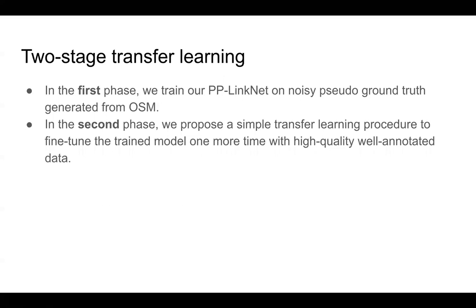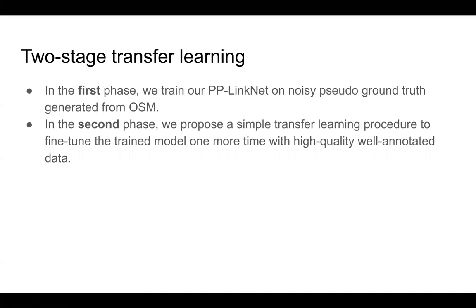The main contribution of our paper is two-stage transfer learning. In the first phase, we train BB-Linknet on noisy pseudo-ground truth data generated from OSM, which is an open-source map with a wealth of data. In the second phase, we apply a simple transfer learning procedure to fine-tune the trained model with high-quality, well-annotated data.